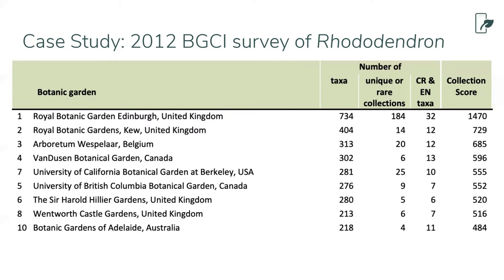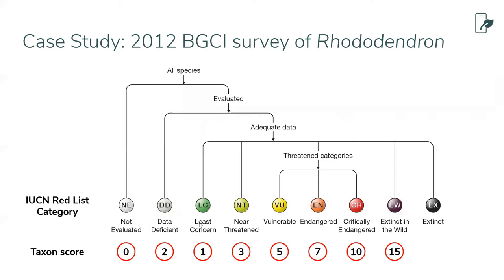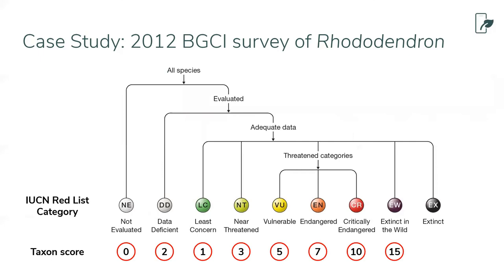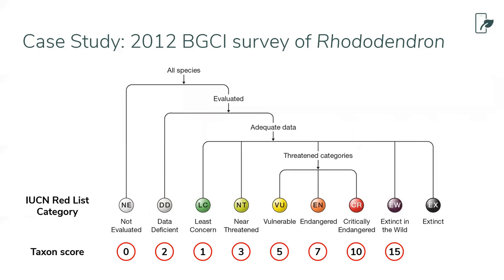A side note: data deficiency was given a rank of two because you don't know if it's near threatened or vulnerable. And a score of zero for 'not evaluated' is somewhat misleading — it could be extremely endangered but just hasn't been assessed yet. It's almost as though you'd want to assign that taxon a high score so somebody actually goes and does something about it. There's a similar challenge around the 'last specimen' question.